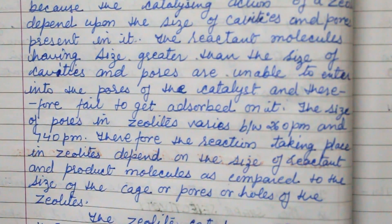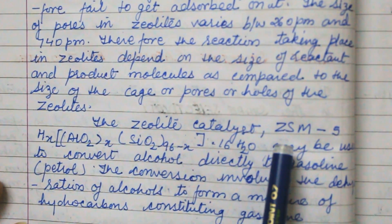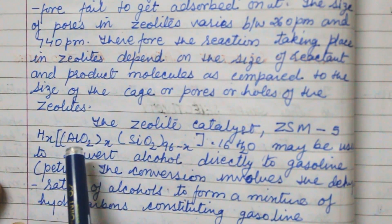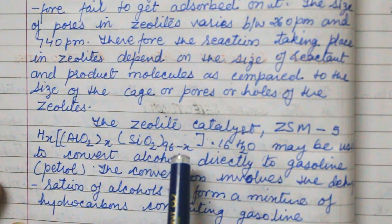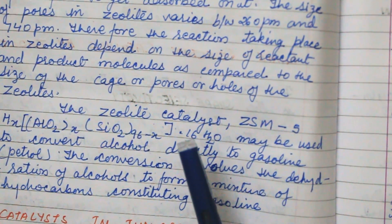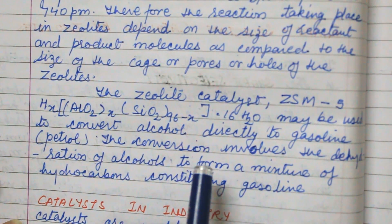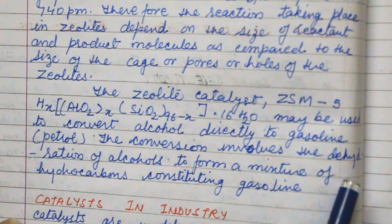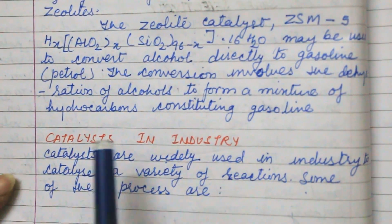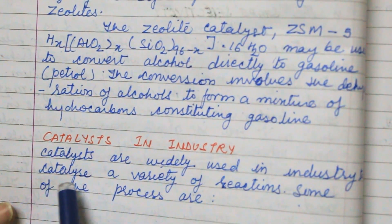Therefore, the reactions taking place in zeolite depend on the size of the reactant and product molecules as compared to the size of the cage, pore, or hole of the zeolite. The zeolite catalyst ZSM-5 has the formula Hx [(AlO2)x (SiO2)(96-x)] · 16 H2O and may be used to convert alcohol directly to gasoline (petrol). The conversion involves the dehydration of alcohol to form a mixture of hydrocarbons constituting gasoline.